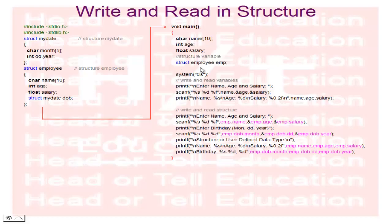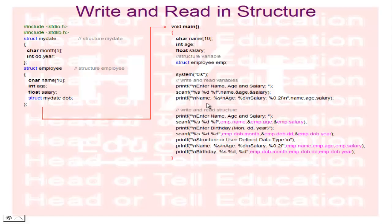I am using Dev C++ to develop this program. Now to read simple variables, I display the message 'enter name, age, and salary'. Using scanf with format specifiers for name, age, and salary: scanf reads name, address of age, and address of salary. Then printf prints all simple variable values on a new line: name, age, and salary.